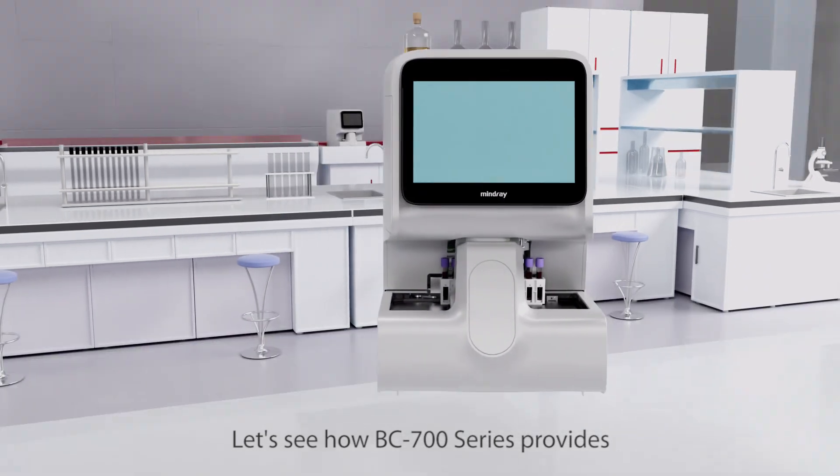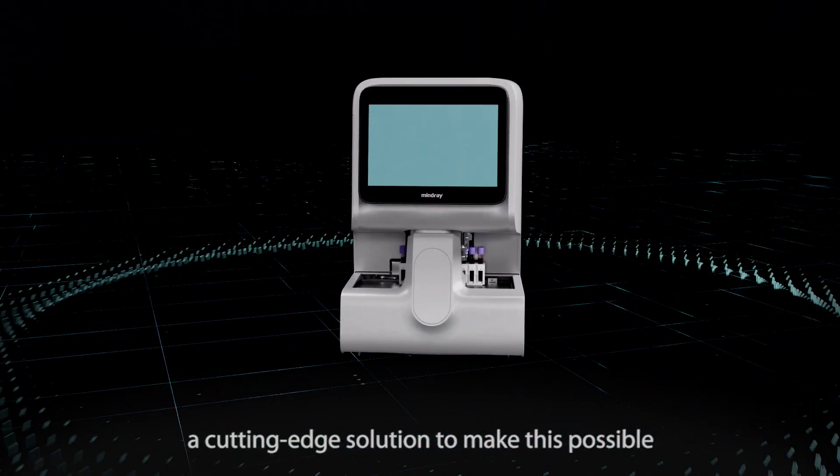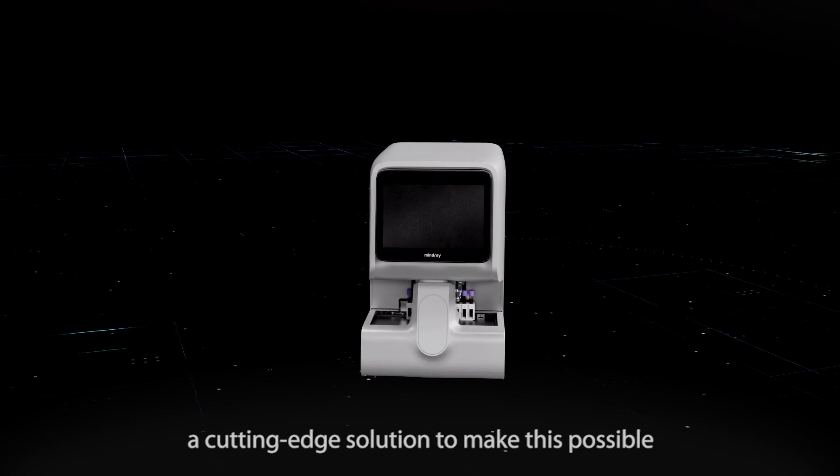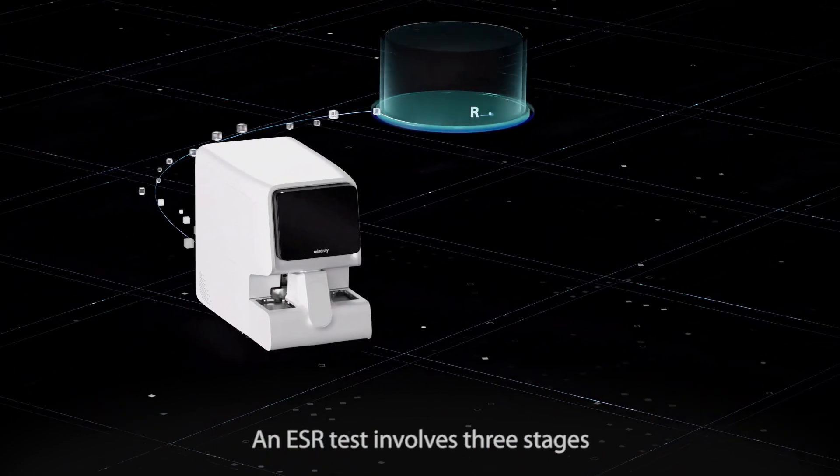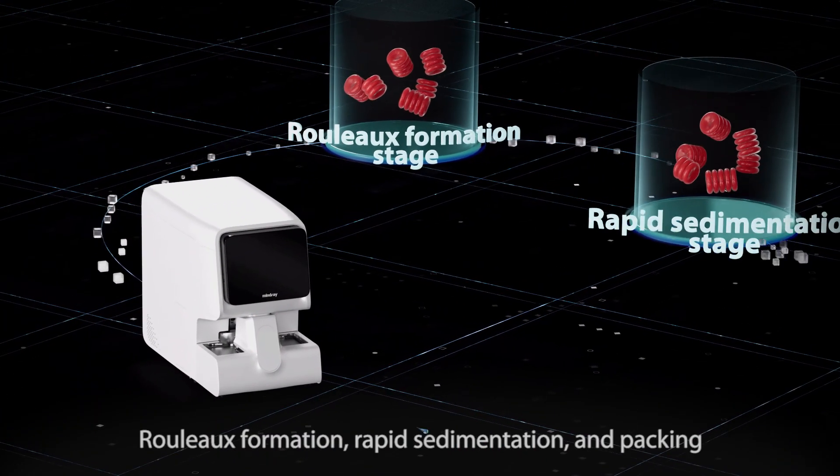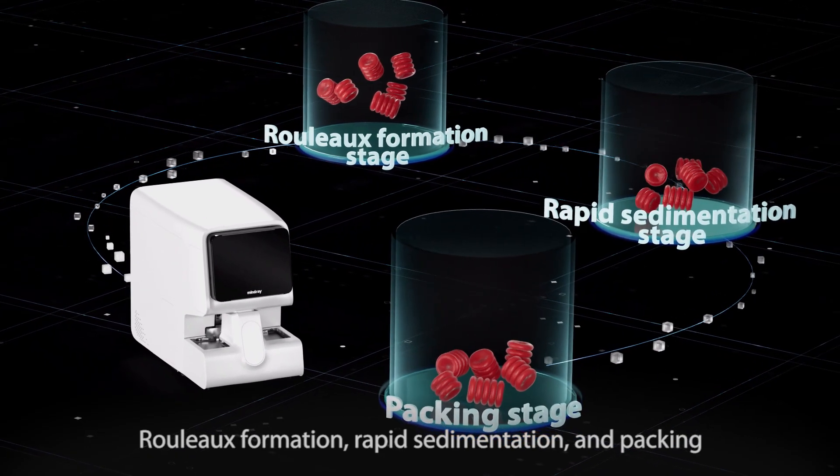Let's see how BC700 series provides a cutting edge solution to make this possible. An ESR test involves three stages: Rolo formation, rapid sedimentation, and packing.